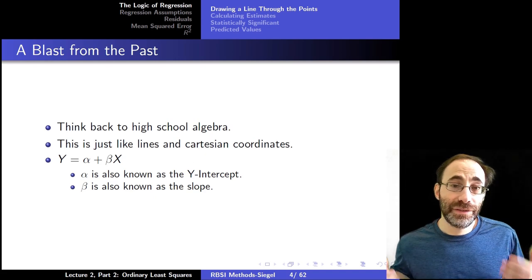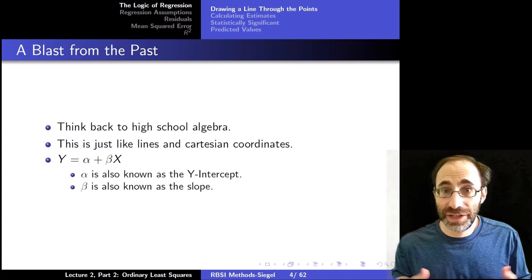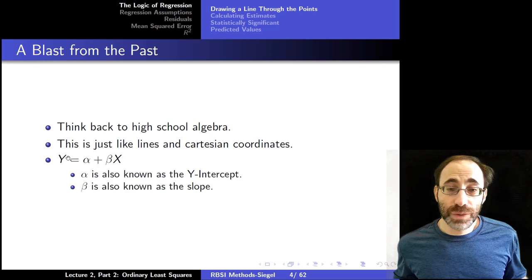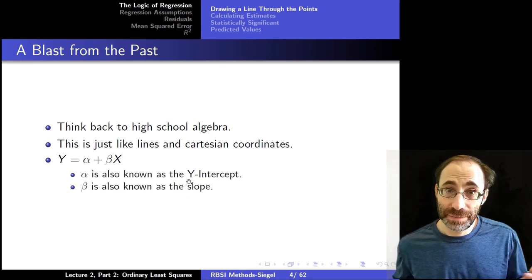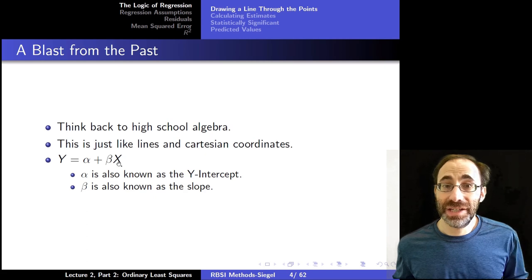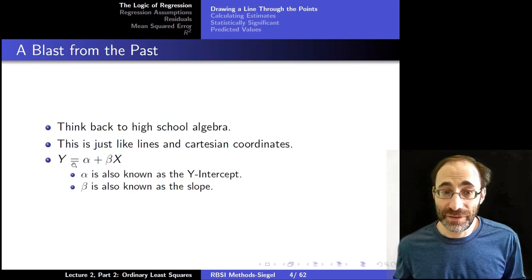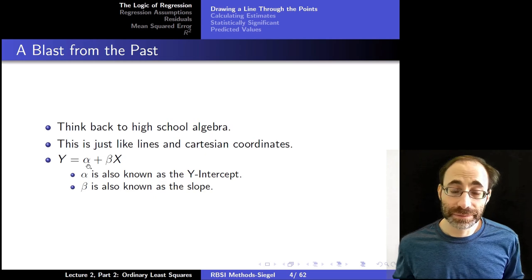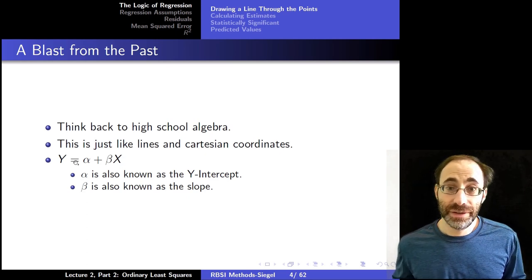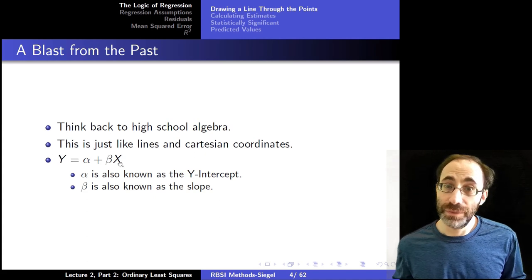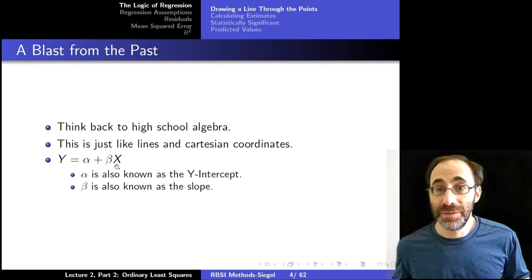The way to see this is to think about lines you might have learned back in high school. All we're doing now is creating lines just like you did in Cartesian coordinates earlier. Y equals α plus βX is a line. α is the y-intercept, the point where X is zero. β is the slope of the line. As I increase X, that's how much Y increases—rise over run. So the change in Y divided by the change in X is β, the slope.